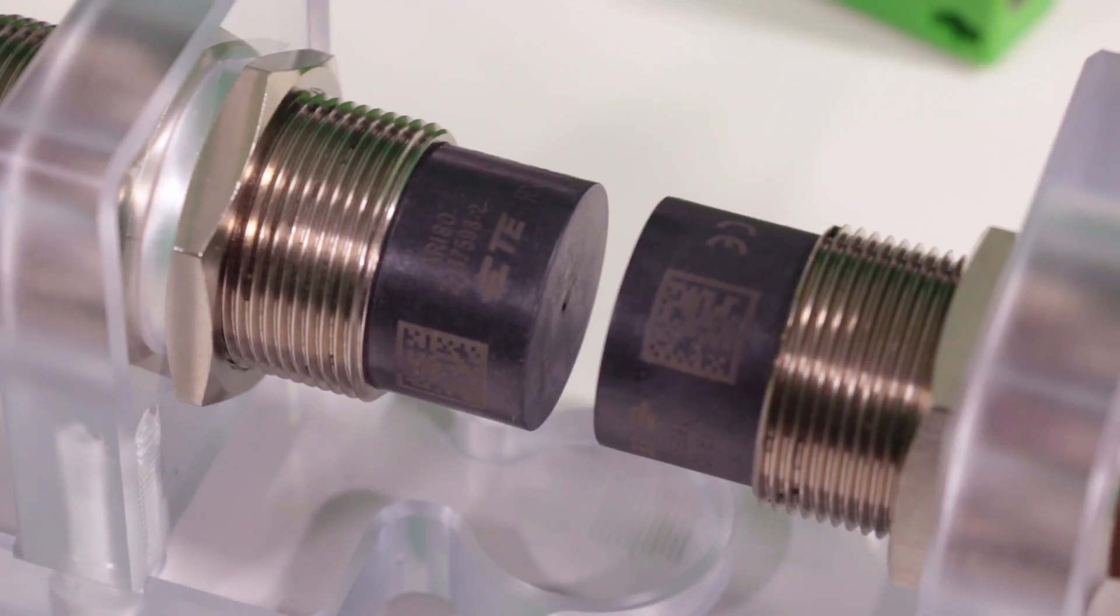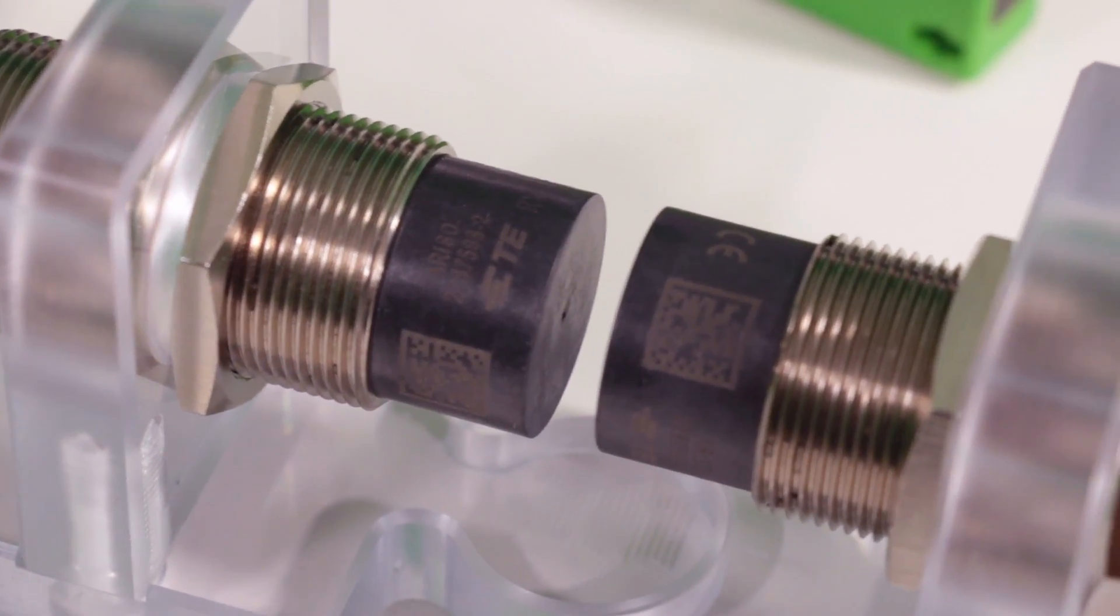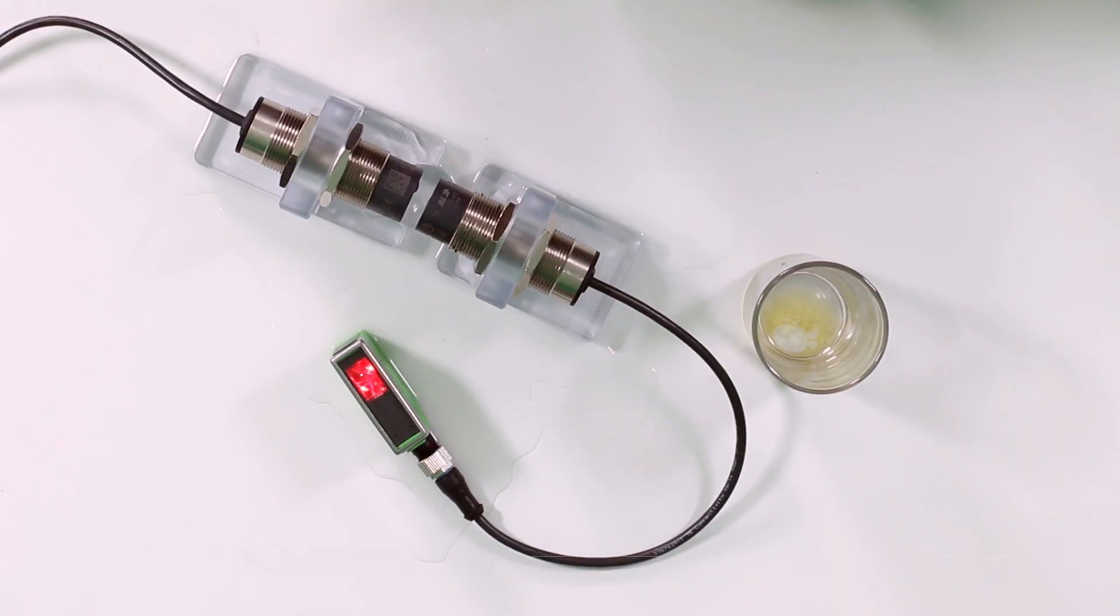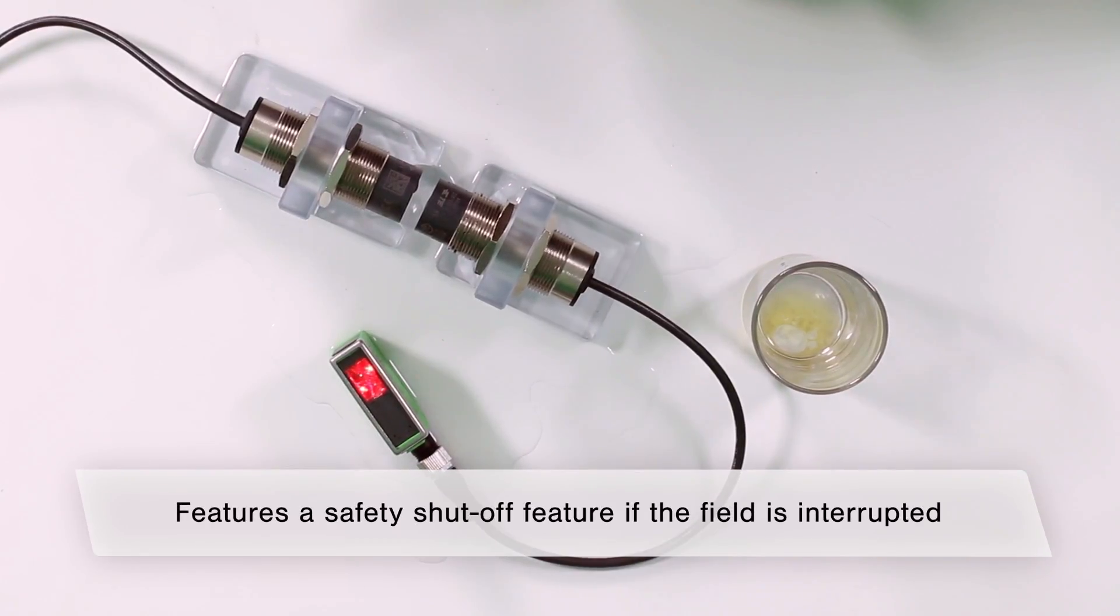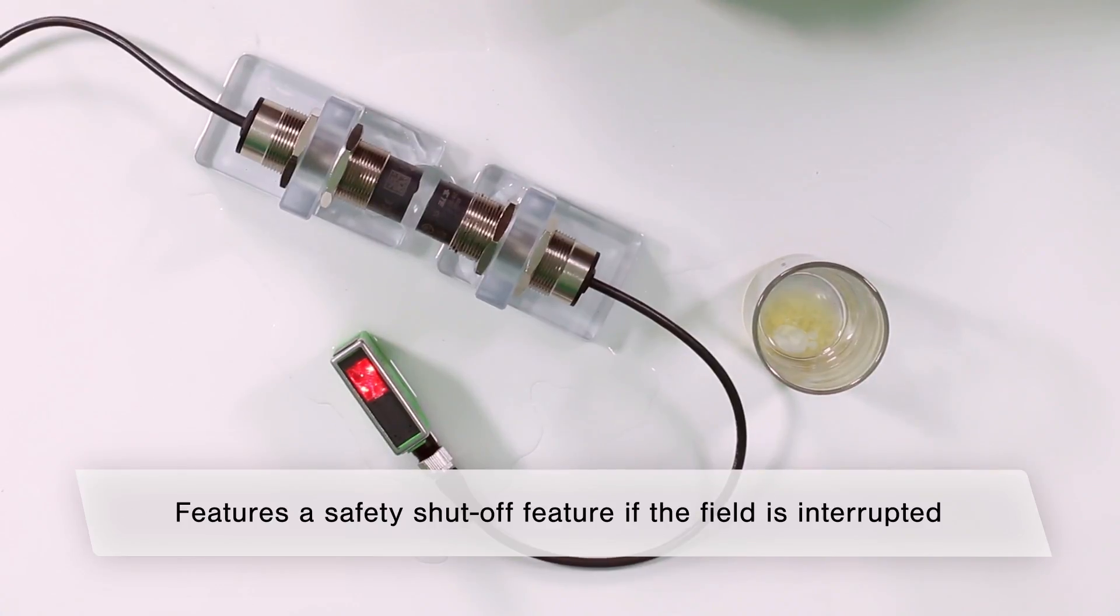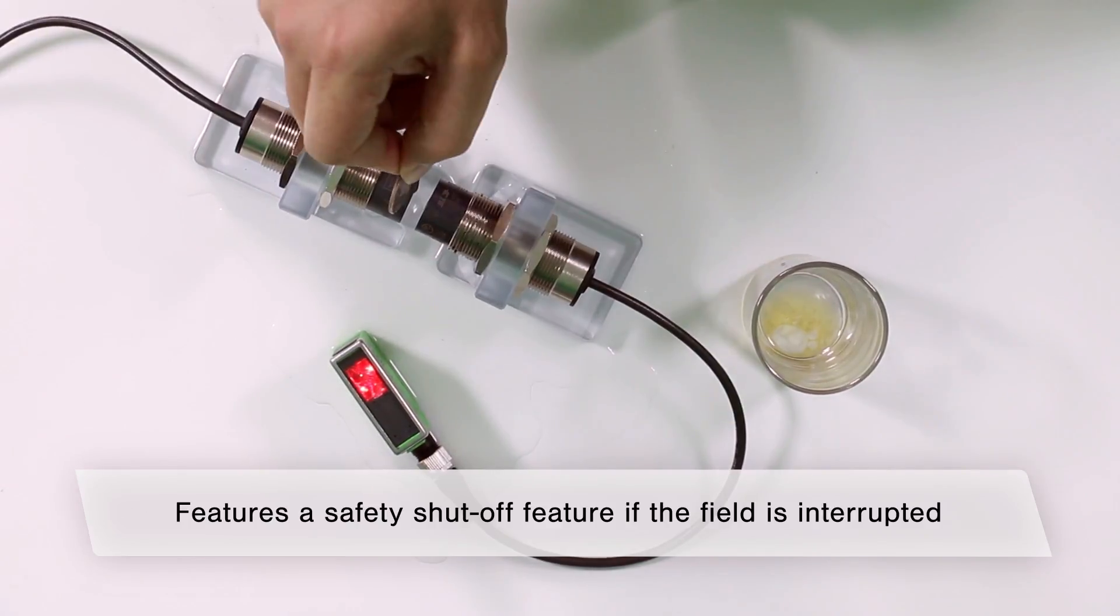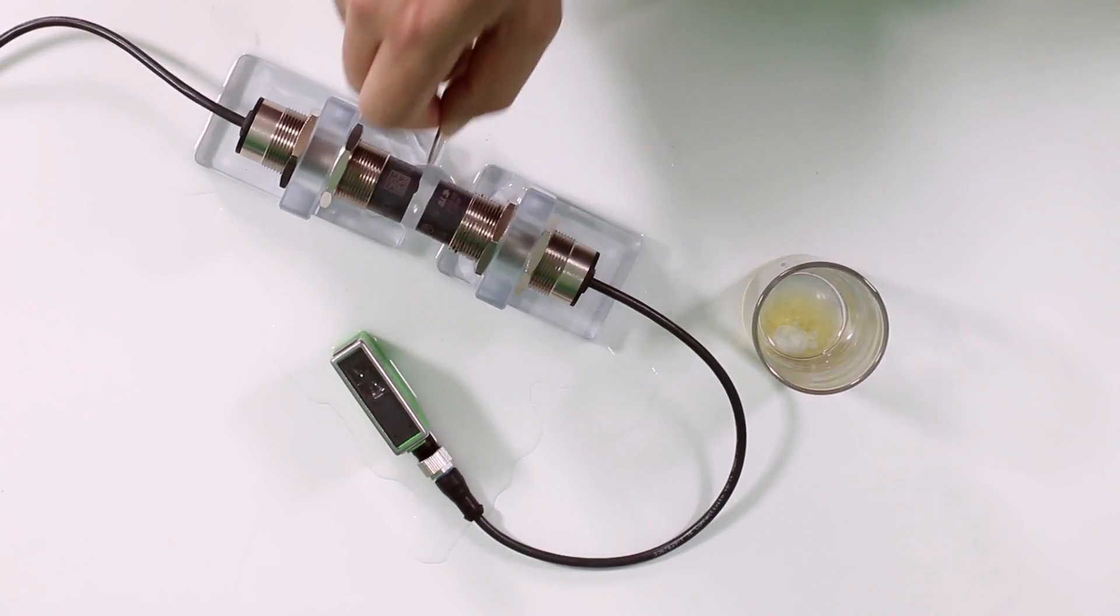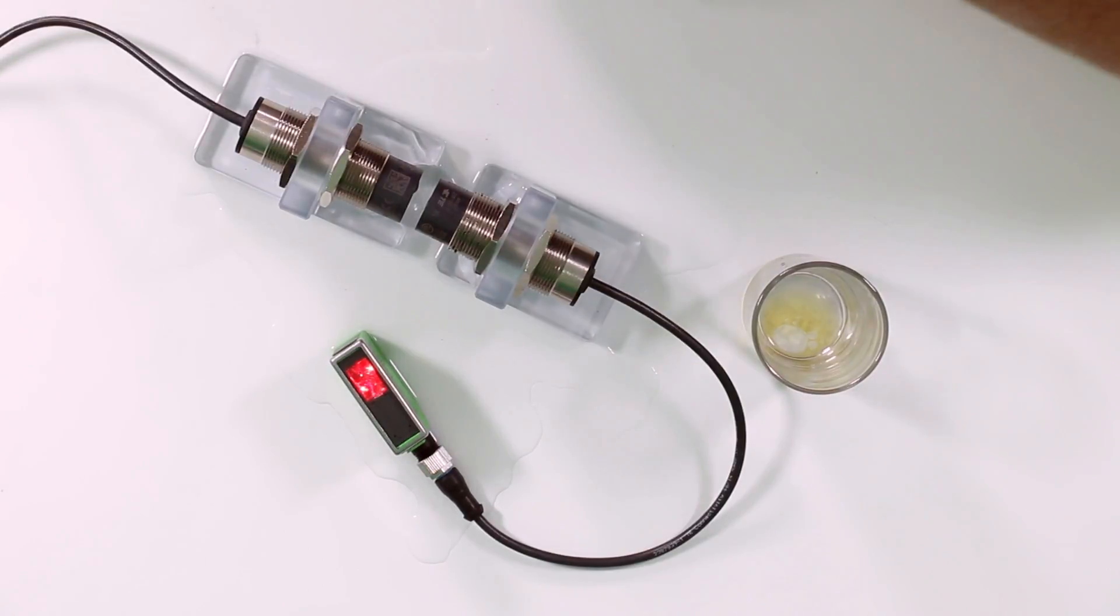Anytime you're talking about magnetic coupling, one concern is a metallic object getting into that magnetic field. That will conduct current and heat up the object, possibly causing a safety concern. If I drop this coin in between, you'll see that ARISO detects that metal object and turns off. Once it's removed, it comes back on.